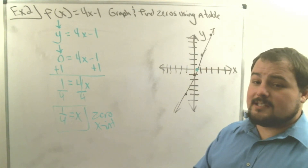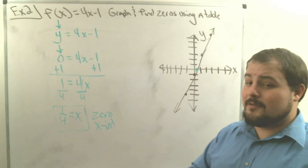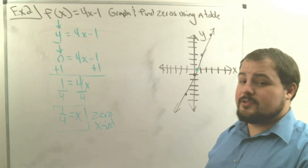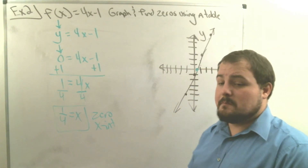That's it for today's lesson. We used the table to graph, and then plugged in 0 for y to solve for x when we couldn't determine the zero visually. You guys did awesome, and I will see you in class tomorrow.